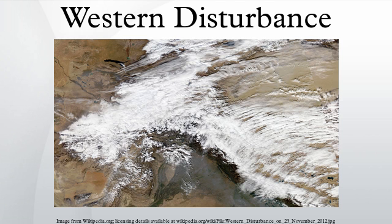Western disturbance before the southwest monsoon: when the western disturbance moves across northwest India before the onset of monsoon, a temporary advancement of monsoon current appears over states including Punjab, Uttar Pradesh, and Jammu and Kashmir. When it passes across north India, it helps to increase monsoon activity over Punjab and Uttar Pradesh.